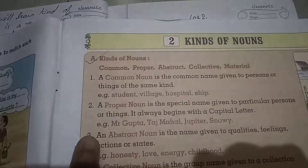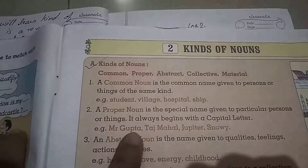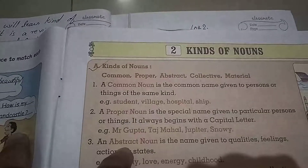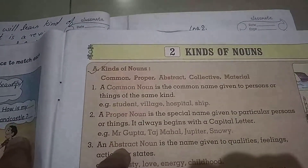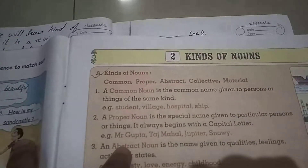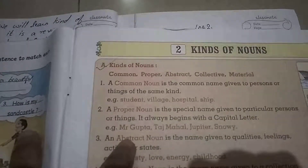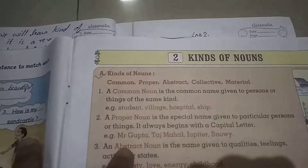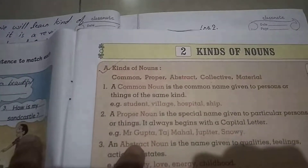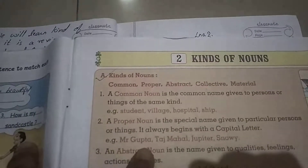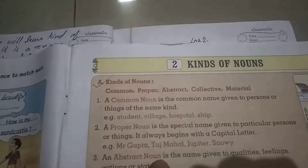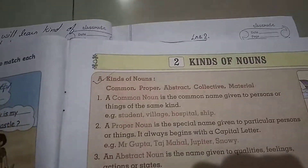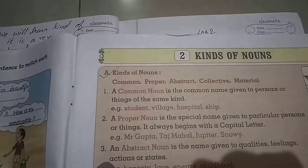Now, what is Proper Noun? A Proper Noun is a special name given to a particular person or thing. It always begins with a capital letter. I am teaching you English — you know my name. My name is Lata, so 'Lata' is a Proper Noun. Your Indian teacher's name is something different — Kavita or Charmili or whatever. That name is called a Proper Noun.